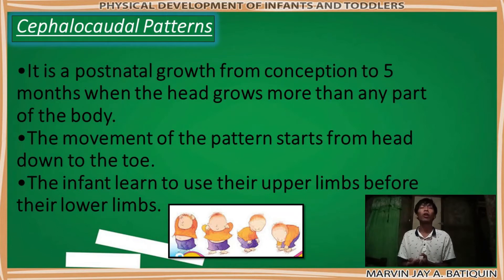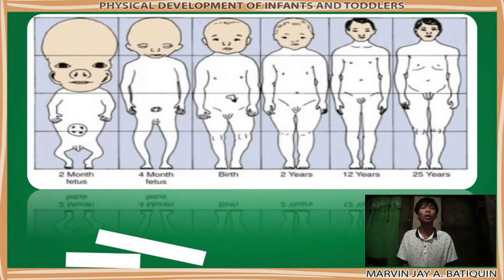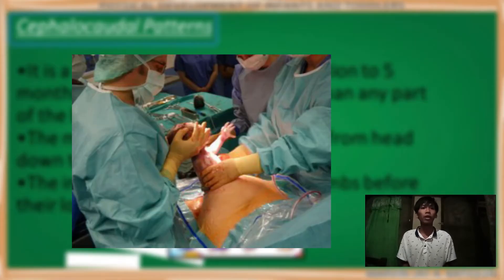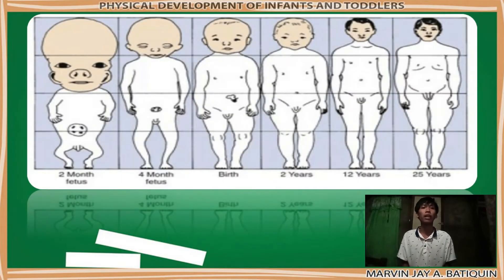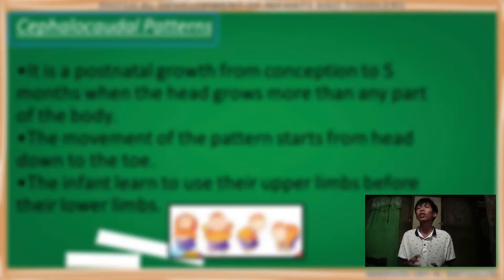We have all seen that when a baby comes out of the mother's womb, we typically see a baby with a big head. The movement of the pattern starts from the head down to the toe. As we look at the picture, it illustrates the changes of the body. This pattern is not only applied after birth — it also works inside the womb. A two-month fetus has a big head compared to other ages. When a mother gives birth, the head must be pulled out first because it is the largest and stiffest part. As time goes by, the shape of the body becomes balanced, gradually changing day by day.